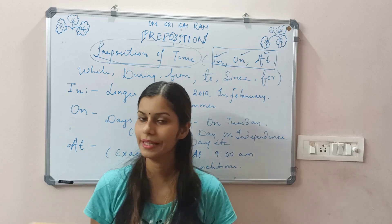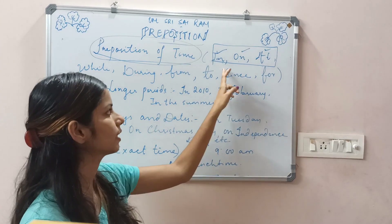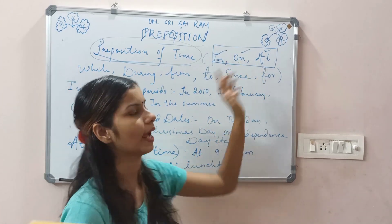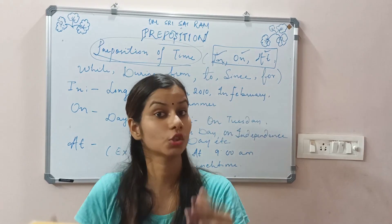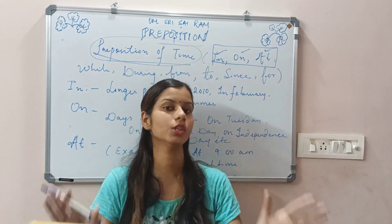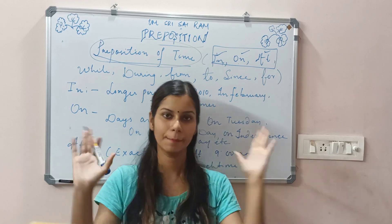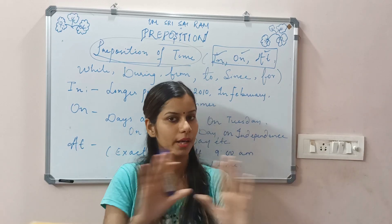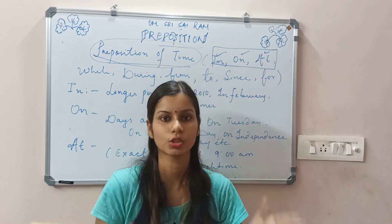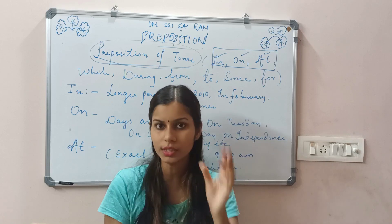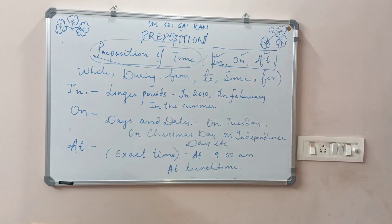So first, let us understand three words. Hum pehle teen words ko lete hain, and those are: in, on, and at. Today we are going to learn about in, on, and at. If we try to learn too many at once, we may forget them all — so let's focus on these three words.